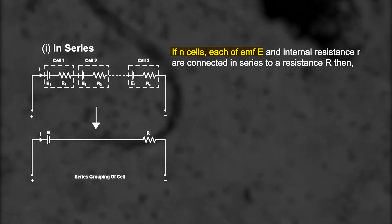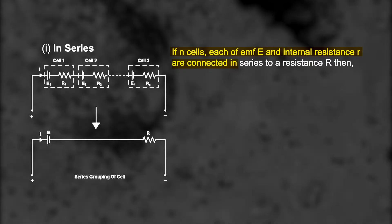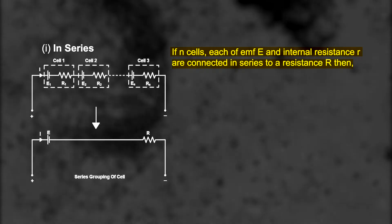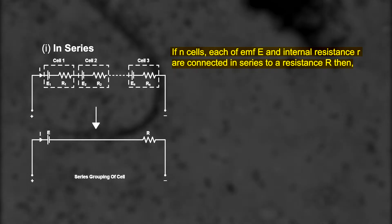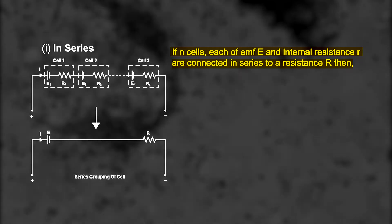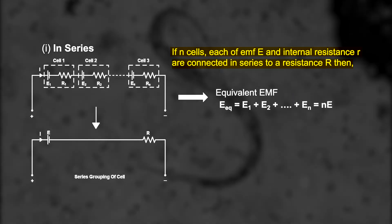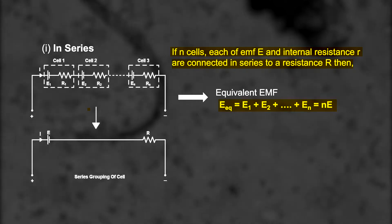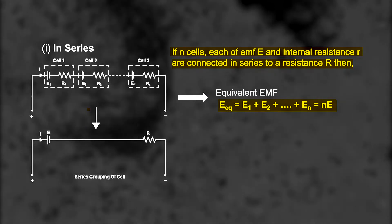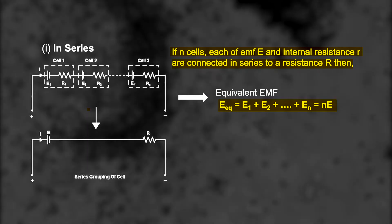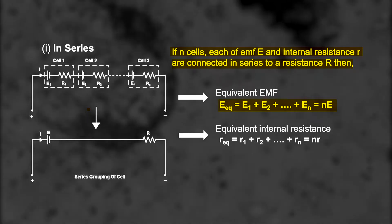If n cells, each of EMF e and internal resistance r, are connected in series to a resistance R, then the equivalent or total EMF will come out to be: E_eq = E1 + E2 + E3 + ... + En. Since all the EMFs are said to be the same, E_eq = nE.